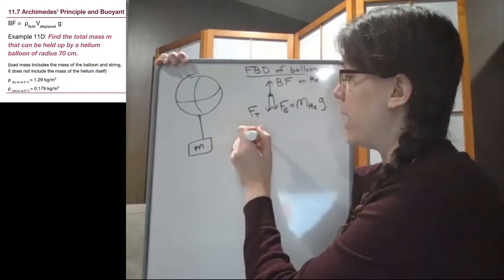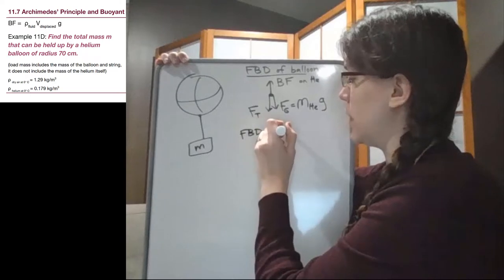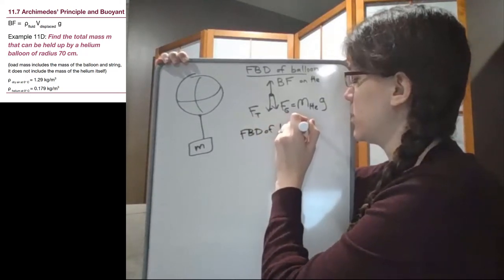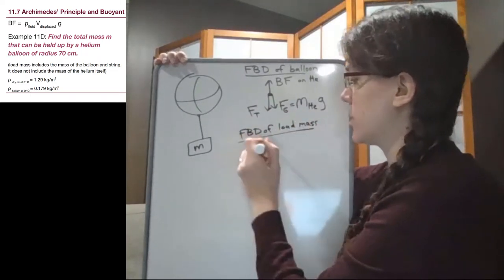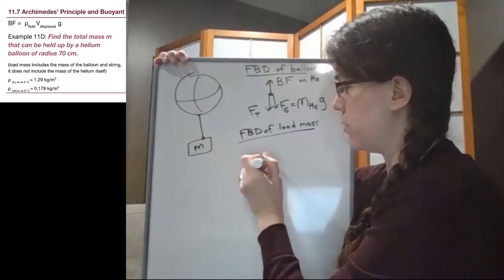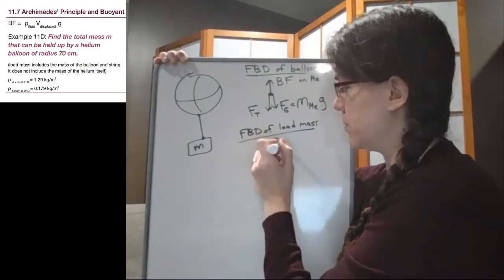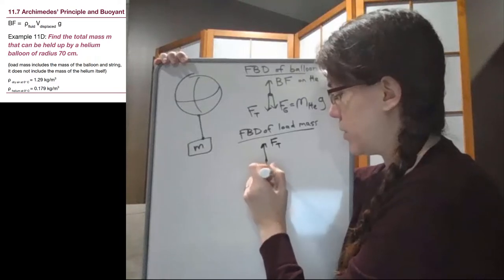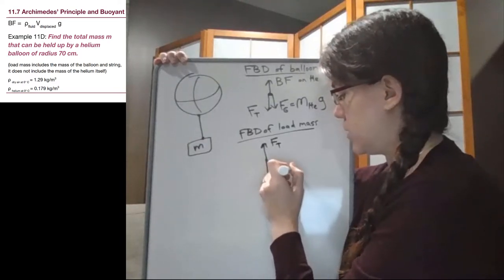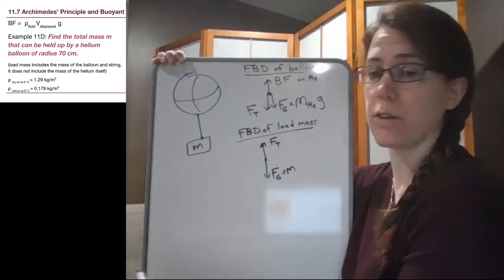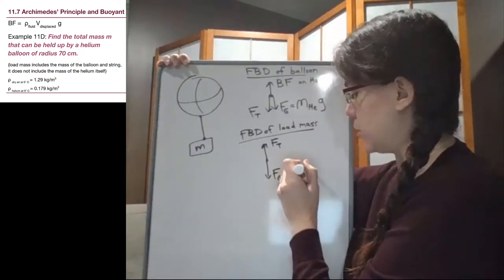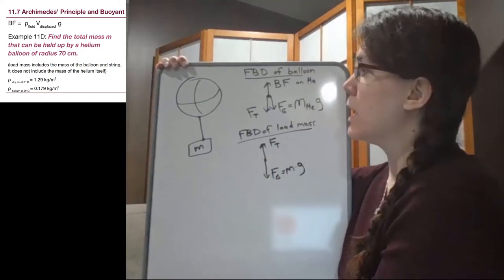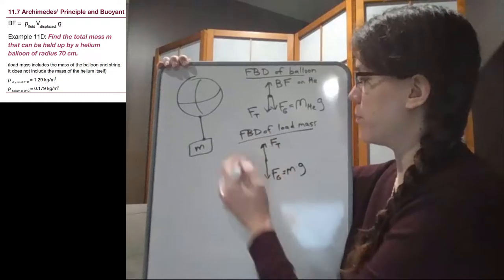And then the free body diagram of the mass, of the load mass, we have the rope attached here pulling upwards, tension, and we have the weight of the load mass, so the mass that we're looking for, m, times g.